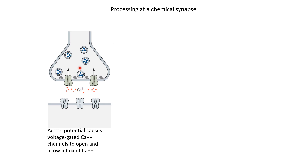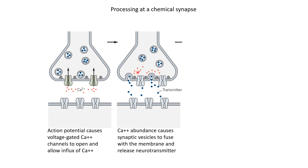As these calcium ions come in, they can bind to various proteins present at the axon terminals, such as synaptotagmin. These proteins, along with other protein complexes, make the synaptic vesicles come to the membrane and fuse with it. The membrane and the synaptic vesicles are both made of similar lipids, so they can fuse. As that happens, the vesicles open towards the outside and neurotransmitters are released into the synaptic cleft.